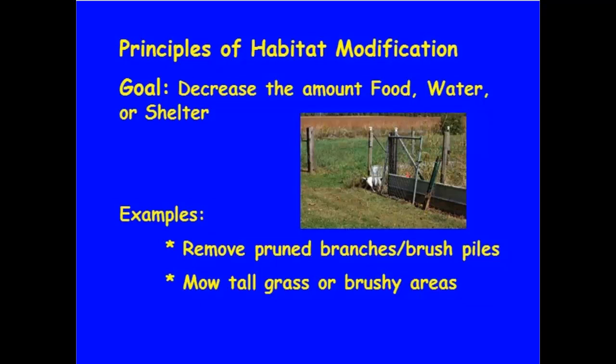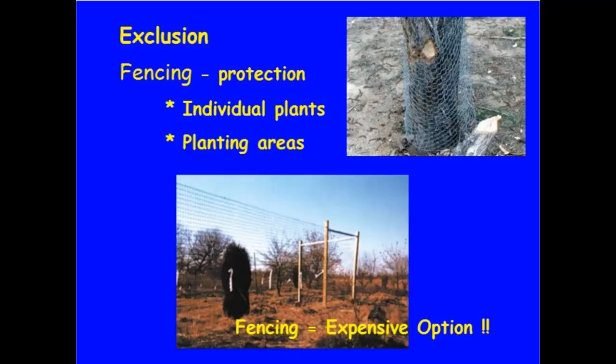Habitat modification is just reducing that available habitat rather than increasing the quality of habitat for that particular animal. We're going to use opposite goals from wildlife management. Our goal is to decrease the amount of food, water, and shelter on your property. That's simply removing brushy areas or mowing the grass, depending on that particular species. Understanding the habitat requirements for that animal is really important if we're going to use habitat modification as a practice.